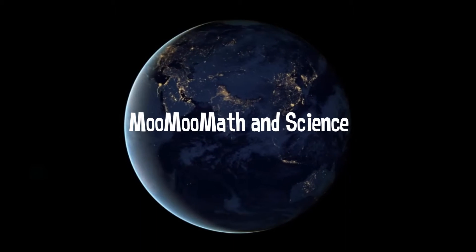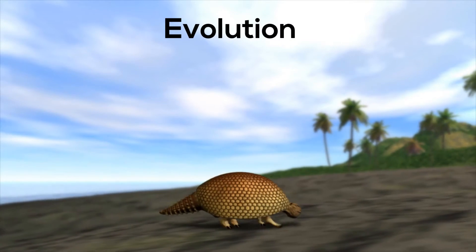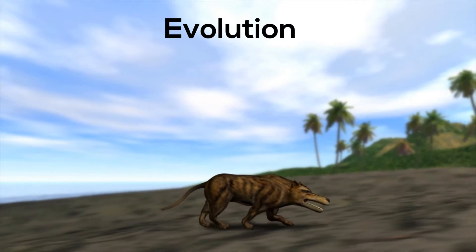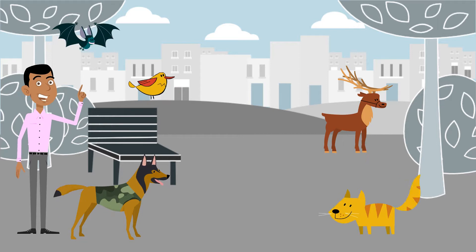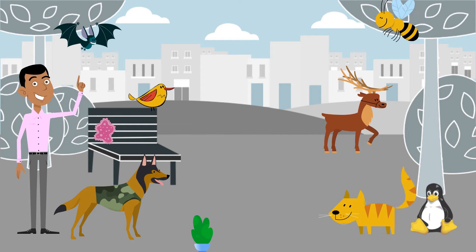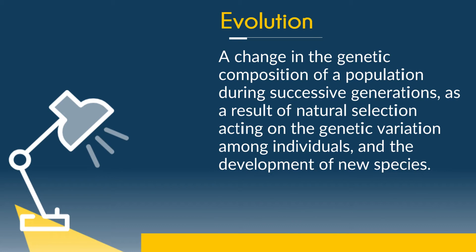Welcome to Moo Moo Math and Science. In this video, I'd like to look at three components of evolution. Evolution is a theory that tries to explain why we have so much variety of life here on Earth. Here is a definition: a change in the genetic composition of a population during successive generations as a result of natural selection acting on the genetic variation among individuals and the development of new species.